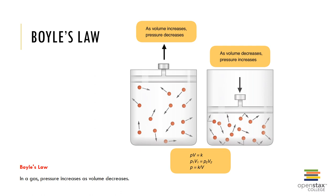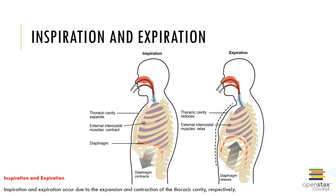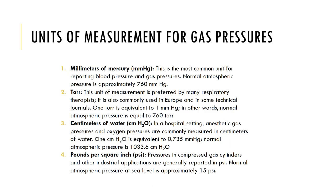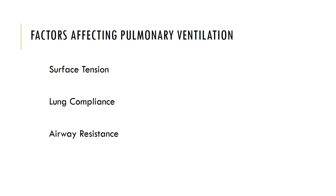The changes in alveolar pressure that occur with breathing are created by variations in lung and thoracic volume, and there are muscles that are used for this. There are several factors that can affect pulmonary ventilation: surface tension, compliance, and resistance.